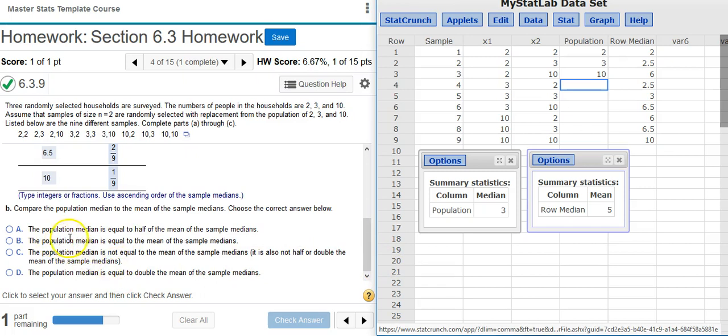Answer option A says the population median is equal to half of the mean of the sample medians. Well, 3 is not half of 5, so that's not right. Answer option B says the population median is equal to the mean of the sample medians. 3 is not equal to 5, so that's not right.